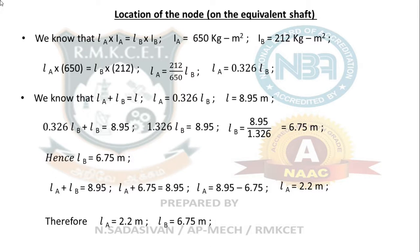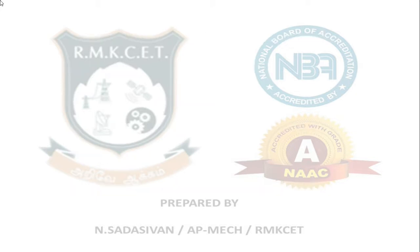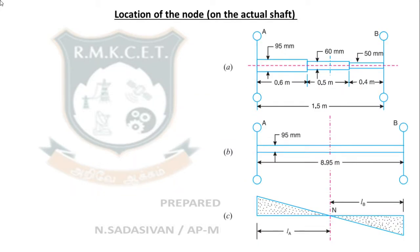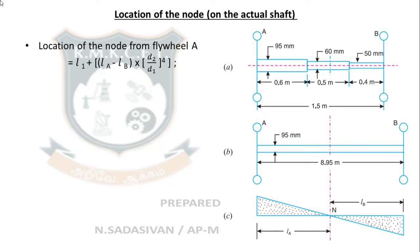All these lengths refer to the equivalent shaft only. The actual shaft is only 1.5 meters. The equivalent shaft is 8.95 meters, having a single diameter. With LA = 2.2 m and LB = 6.75 m known, we will now calculate the location of the node on the actual shaft.